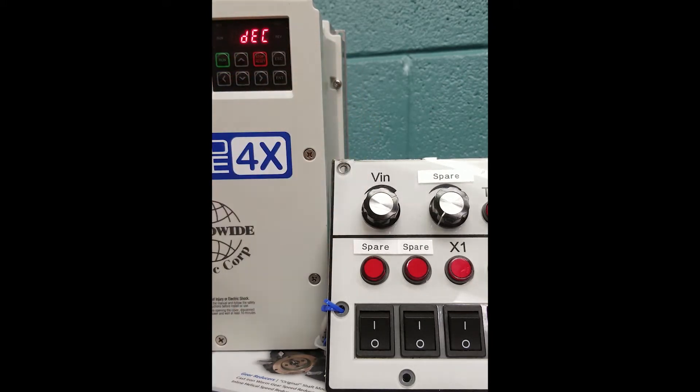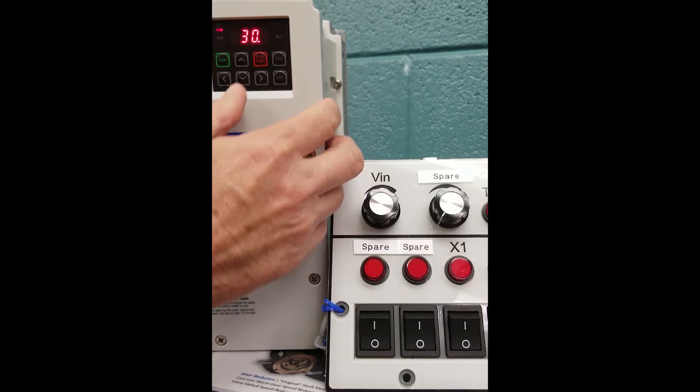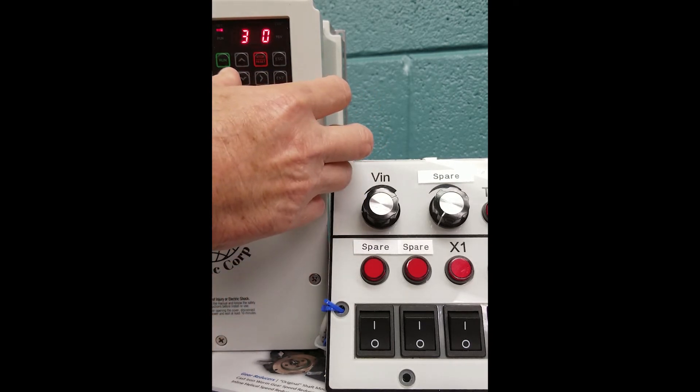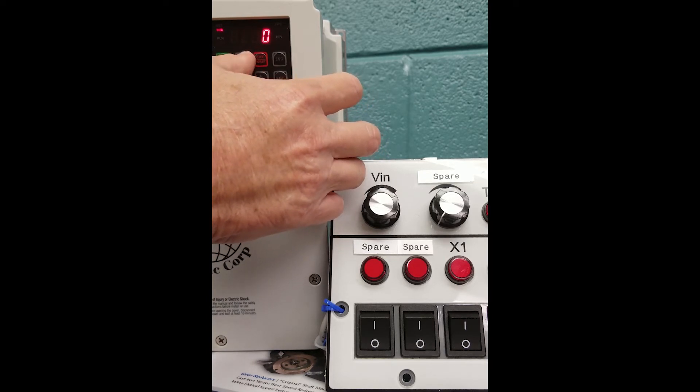We're going to use the up arrow again to hit the DEC for deceleration, enter to enter in the parameter. This unit is factory default at 30 seconds. We're going to set it at a 4 second deceleration time, again using our keypad to make these changes.